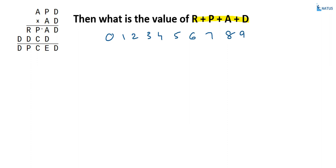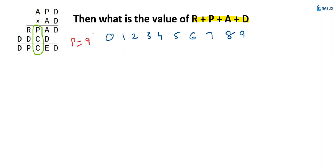If you observe the middle one, P plus C is equal to C. Already we discussed in previous examples — if P plus C is equal to C, then what is the value of P? P must be either 0 or 9. Here P is equal to either 9 or 0. Let us take 9 first. Suppose 9 is not satisfied, then we go to 0.